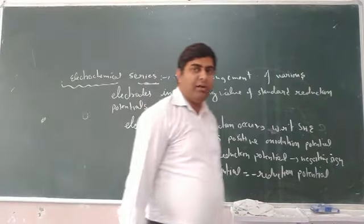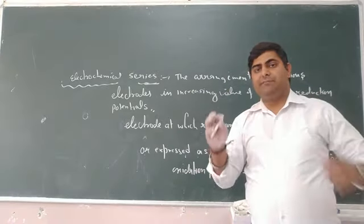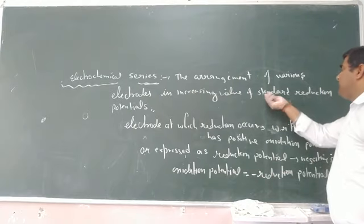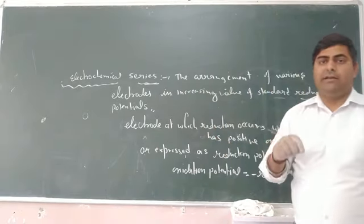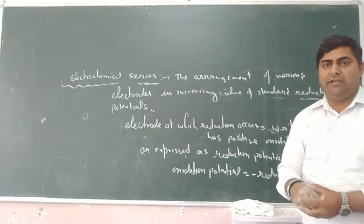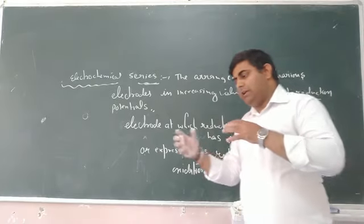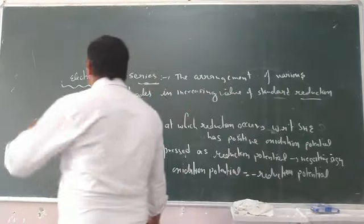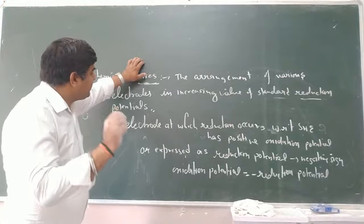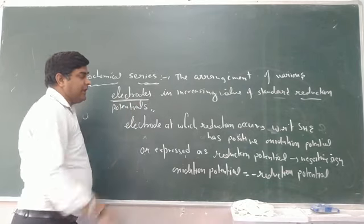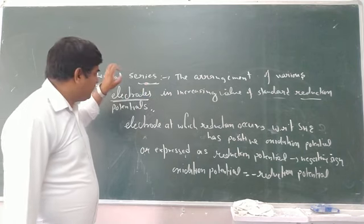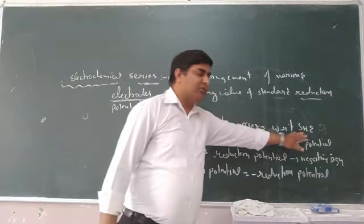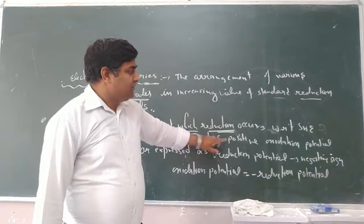Now we are moving towards a very important concept which is known as electrochemical series. Electrochemical series is simply defined as the arrangement of different types of electrodes in increasing value of standard reduction potential. Keep in mind the standard reduction potentials are calculated by using SHE. We take different kinds of electrodes and by using SHE their reduction potential has been calculated.